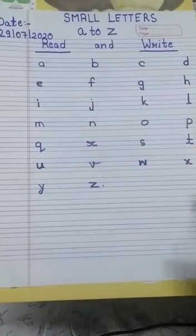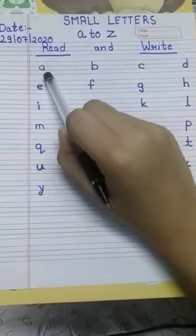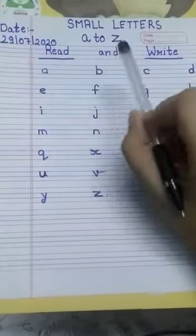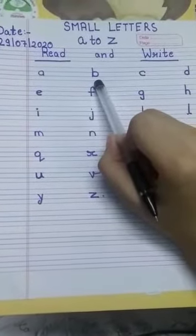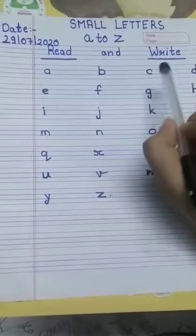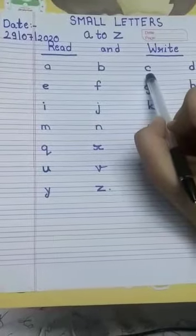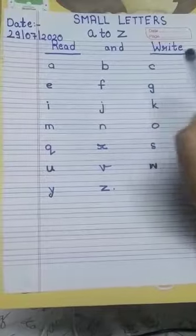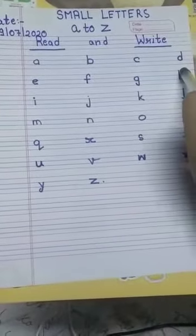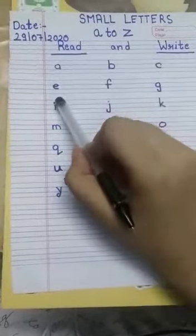Let's start. A, A for apple. B, B for boy. C, C for cat. D, D for dog.